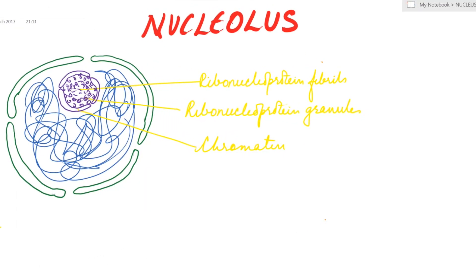Present in the nucleoplasm is nucleolus. Nucleolus consists of ribonucleoprotein fibrils at the center, surrounded by ribonucleoprotein granules, and surrounding that is chromatin of chromosomes associated with the nucleolus.